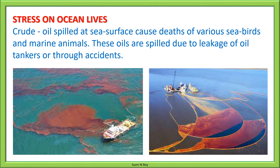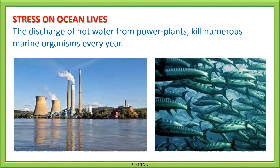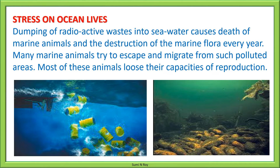Crude oil spread at sea levels causes death of various seabirds and marine animals. These oil spills are due to leakage of oil tankers or accidents. About 50,000 seabirds die every year due to oil spills on seawater, and numerous other marine animals also die due to oil spills. The discharge of hot water from power plants kills numerous marine organisms every year. Dumping of radioactive waste into seawater causes death of marine animals and destruction of marine flora. Every year, many marine animals try to escape and migrate from such polluted areas, and most of these animals lose their capacity of reproduction.